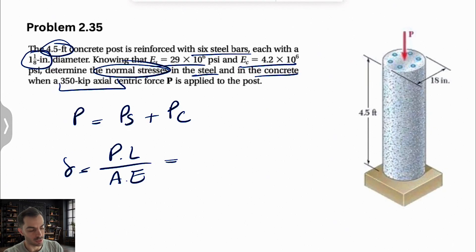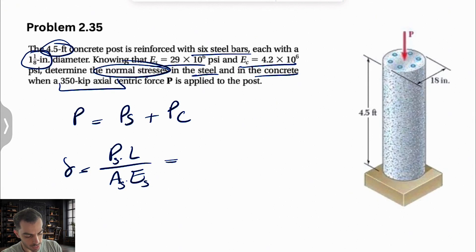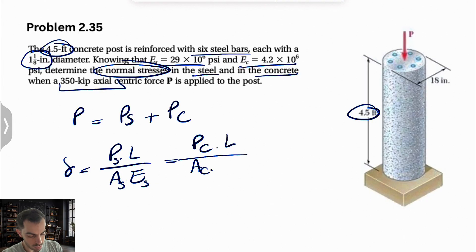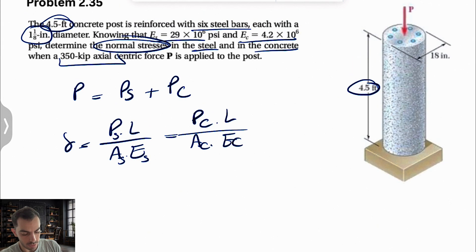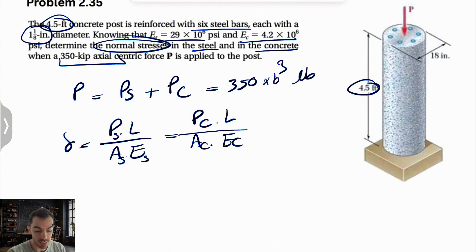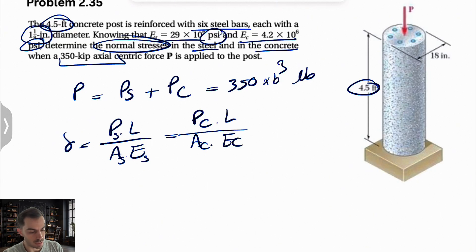They're actually going to be shortened because they are in compression, so we're going to have the same deformation for each. Using the formula with subscript S for steel, they share the same length. The length is the same — 4.5 feet — but the cross-sectional area and elastic modulus are different for each material.